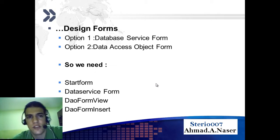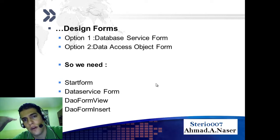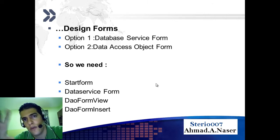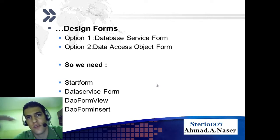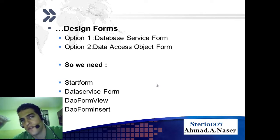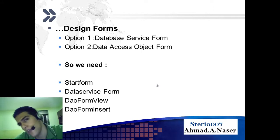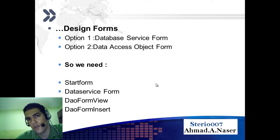For the user interface, or the forms, we are going to make three forms. One form is for taking the database fields and putting them inside a table, which is known as the data service form. Another form will use the data access object, which is the data access layer between the database and the user interface — that is known as the data form view. The last thing we need is an insert form to insert data into the database, called the data form insert. And do not forget the start form that leads us to navigate to each of these three forms.